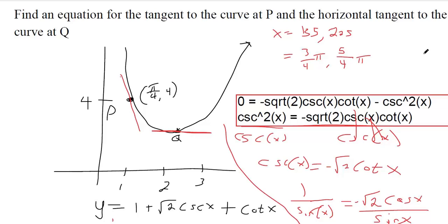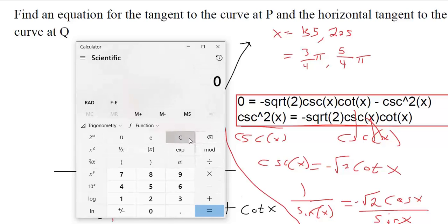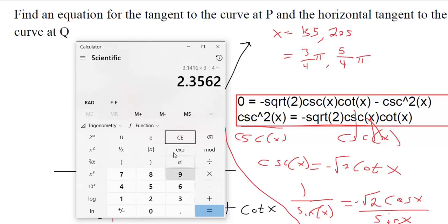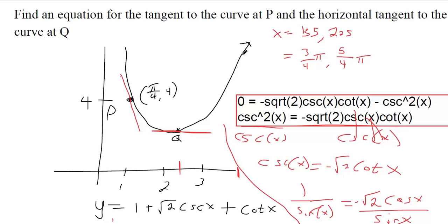Those are the two x-coordinates where we should have horizontal tangents. At 3π/4, that's approximately 3.1416 times 3 divided by 4, which is 2.356 — that looks to be right around where Q is. The other one is 5π/4, approximately 3.9, so apparently over here the curve slopes off and has another horizontal tangent, but the textbook problem only gave us this graph.